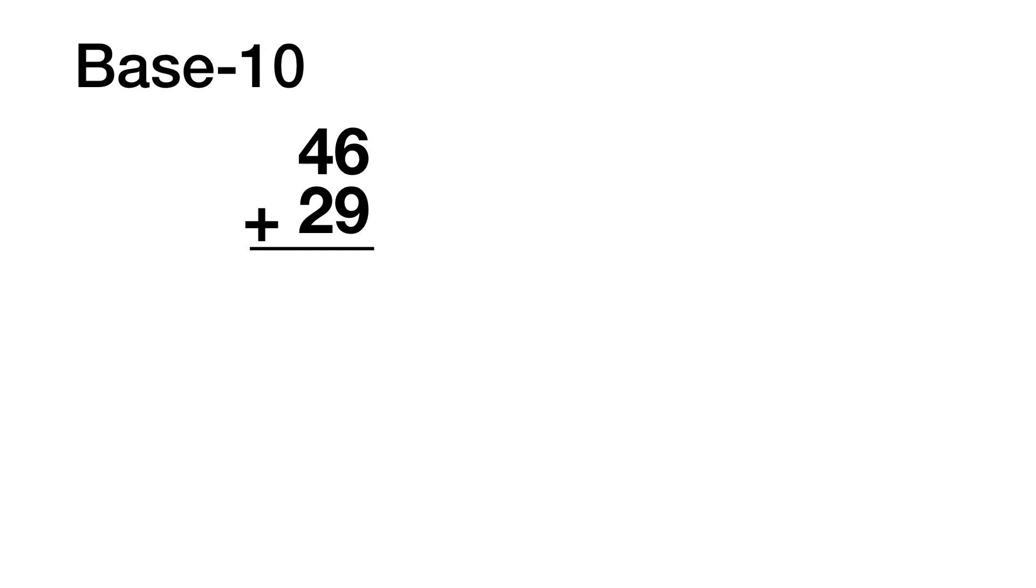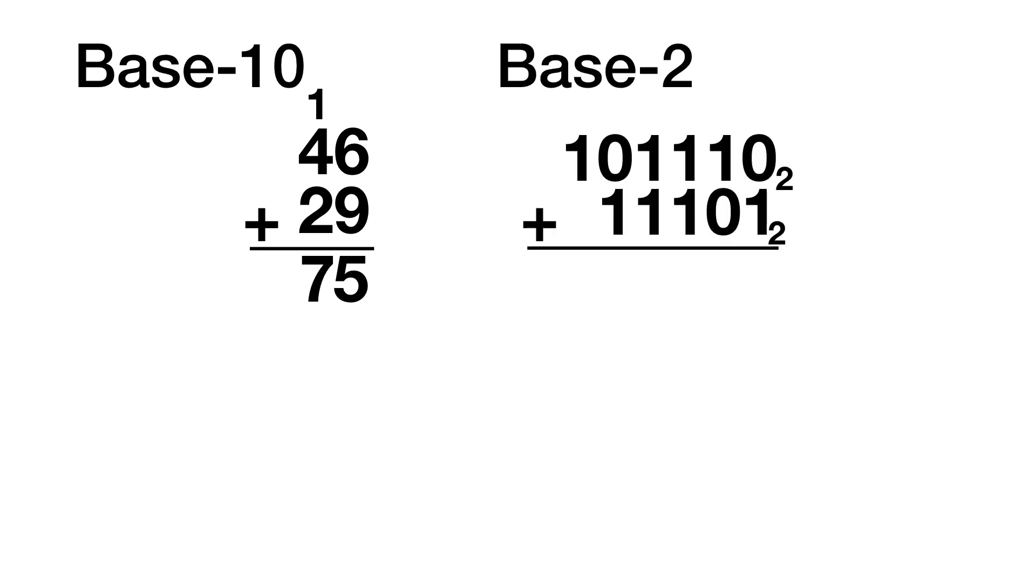So whenever we add two binary numbers, we need to remember that 1 plus 1 is 10. To add the numbers 46 and 29 in base 10, we line up the numbers: 6 plus 9 is 15, we write the 5, we carry the 1. 1 plus 4 plus 2 is 7, so 46 plus 29 is 75.